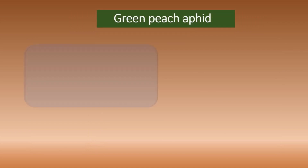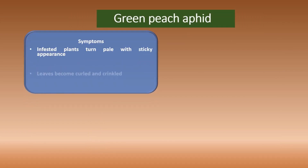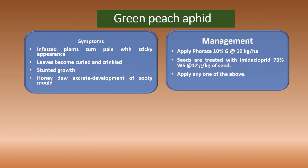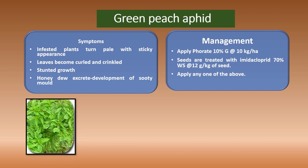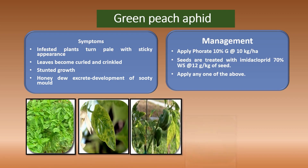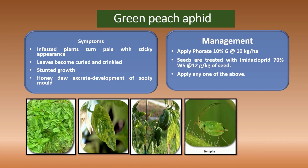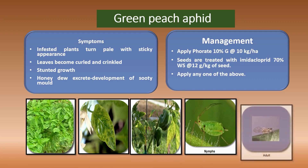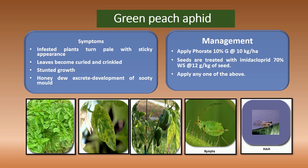Coming to the next insect pest — green peach aphid. Aphids are a major problem in any crop and will damage the crop. The symptoms are pale and sticky appearance, crinkling and curling of leaves, stunted growth, honeydew secretion, and development of sooty mold will be seen in the chili plants. Here are pictures showing how aphids appear and how they affect the crop.